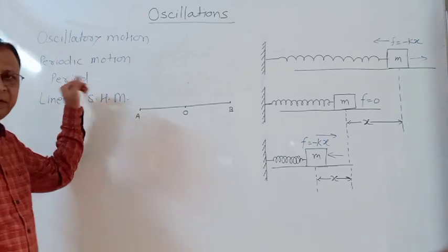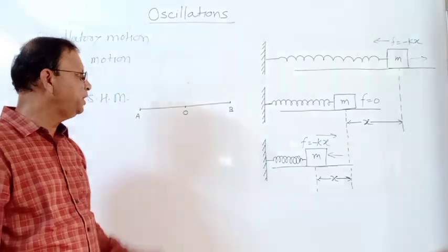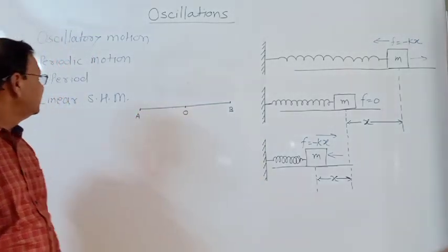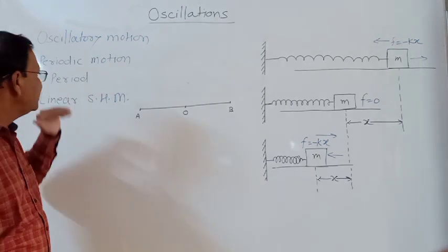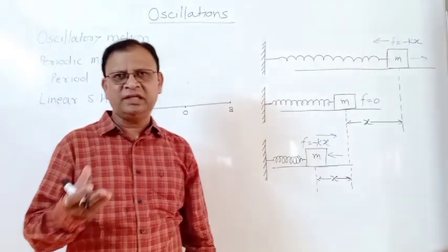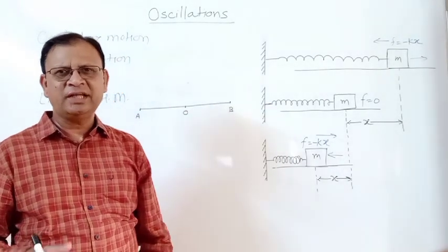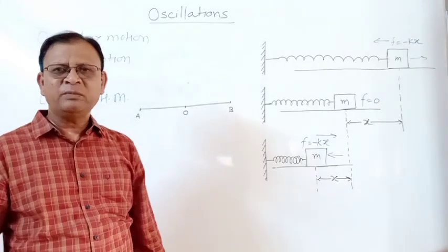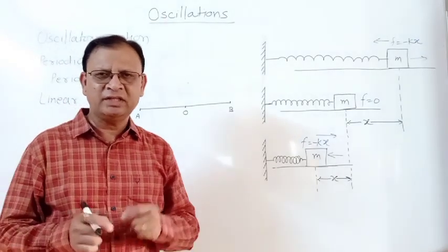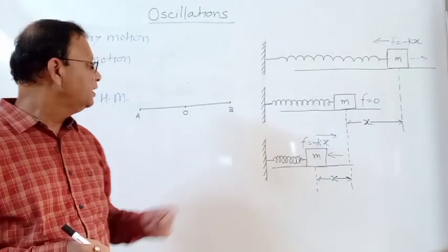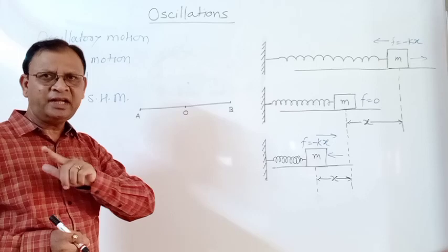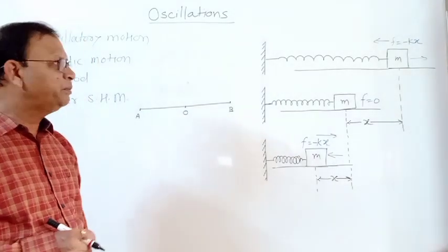The period is the time taken by an object to complete one full oscillation. If oscillatory motion is periodic, it is called simple harmonic motion. It is called harmonic because sine and cosine functions are harmonic functions — as the value of theta changes, sine theta and cosine theta oscillate between +1 and −1, representing extreme positions with 0 as the mean. This motion along a straight-line path is called linear simple harmonic motion.